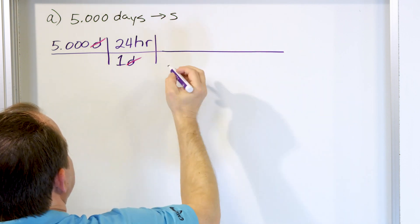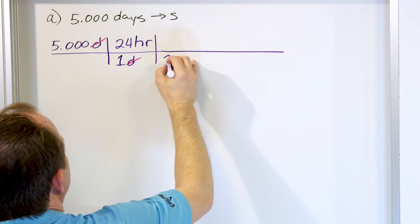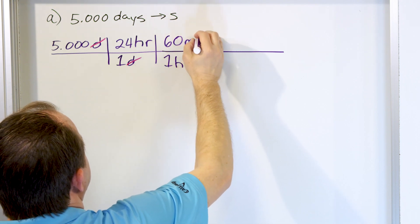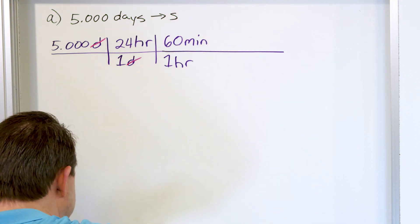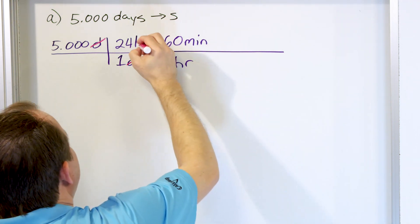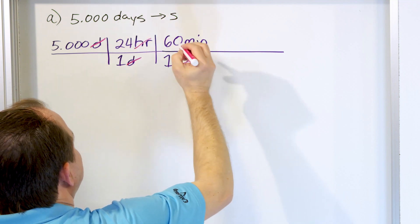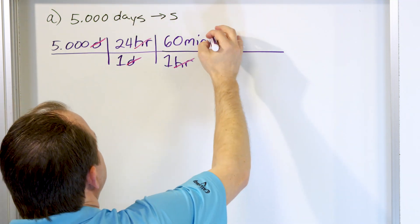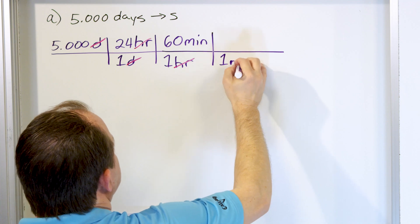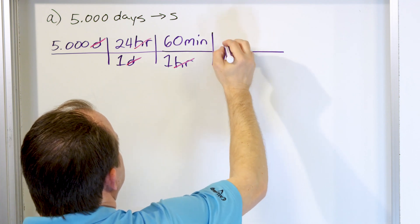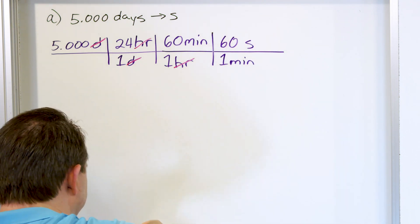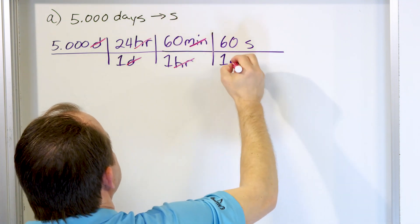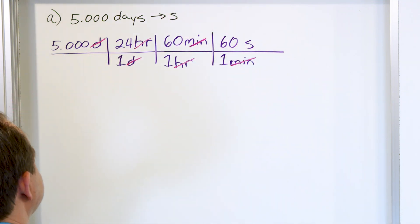Now, how do I get towards seconds? I know that in one hour there are 60 minutes, and I arrange it this way so that the hours cancel. If I stop now I'd be in minutes. But I also know that in one minute there are 60 seconds, and that's where I want to end up. So the only units left are seconds.